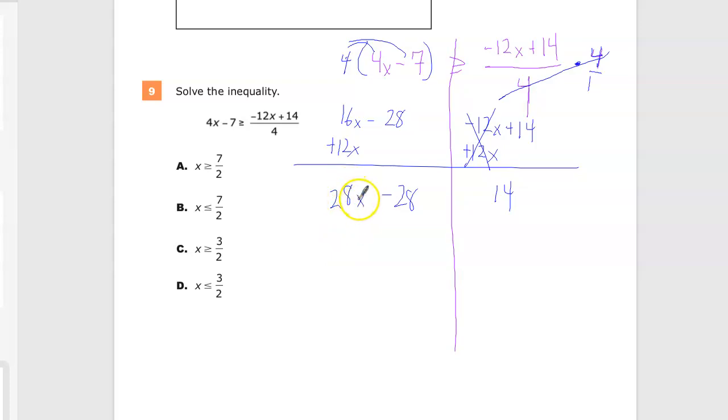Now, the variable is still not by itself. I have this weird minus 28 thing. So I need to get rid of minus 28 and use the opposite operations because the like terms are on different sides. 28x and that would be 2x. 42.